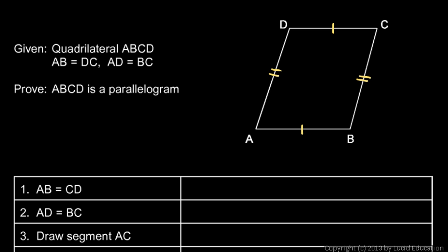Here's our approach: I'm going to draw in segment AC — the diagonal right there. That divides the quadrilateral into two triangles, and I'm going to show that those triangles are congruent by SSS.